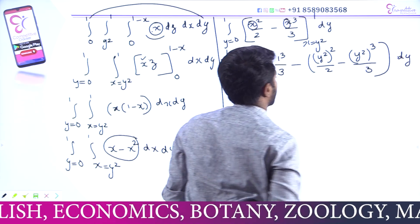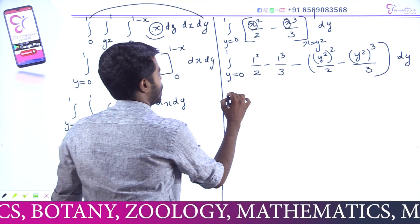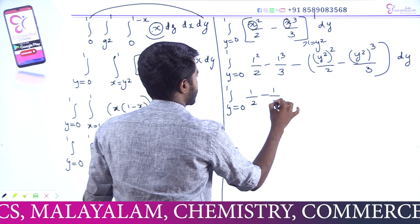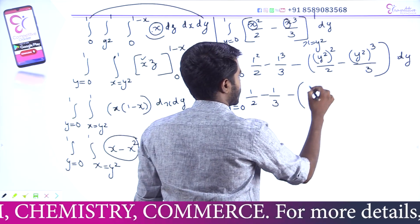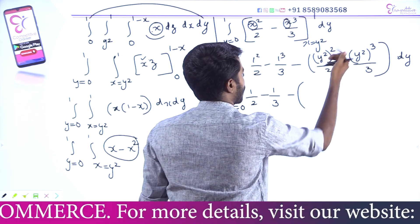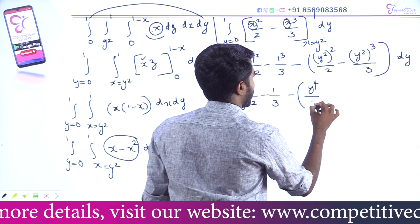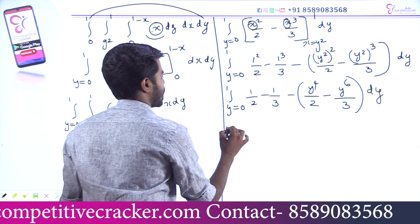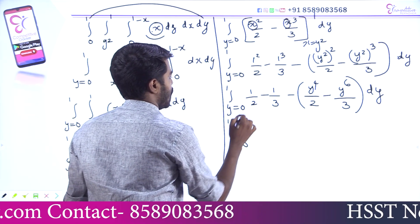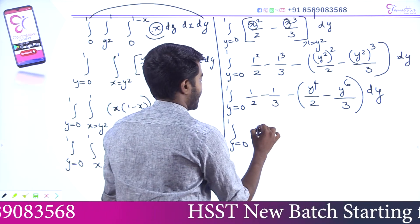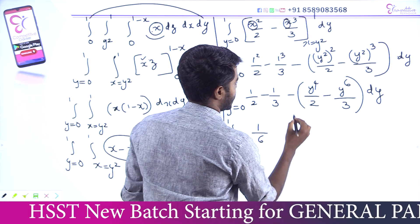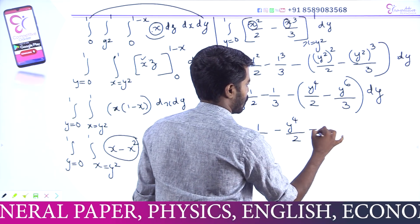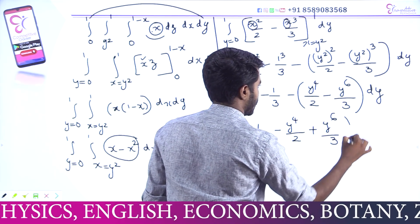That is integral y = 0 to 1 of [1 by 2 minus 1 by 3 minus y⁴ by 2 plus y⁶ by 3] dy. That is integral y = 0 to 1 of [1 by 6 minus y⁴ by 2 minus y⁶ by 3] dy.